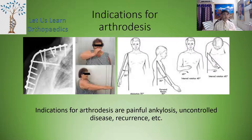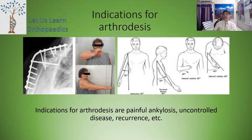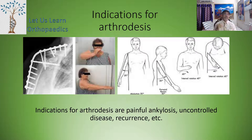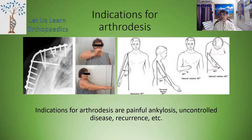Sometimes we need to go for shoulder arthrodesis. The indications for arthrodesis are: painful ankylosis, uncontrolled disease, and recurrence. These are the three main important indications. The ankylosis can be done as shown in the first x-ray.